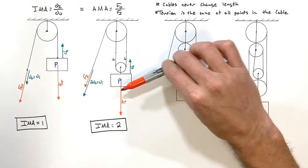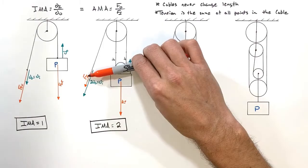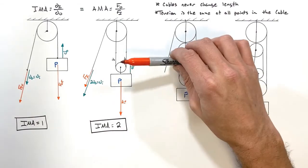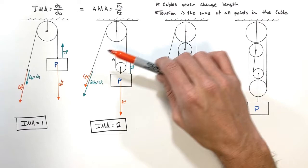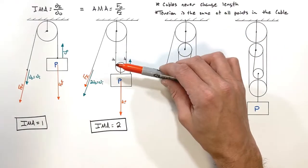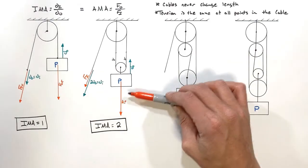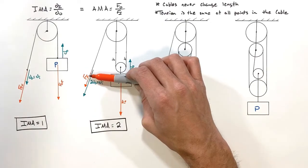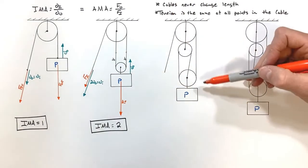In practice, if we want to lift load P, we only need to pull with a force that is half the load's weight. The trade-off is we have to pull twice as far as the load actually moves. Simple machines exchange force and displacement — in this case we get a large output force over a small displacement out, as the result of a small input force applied over a larger displacement in.